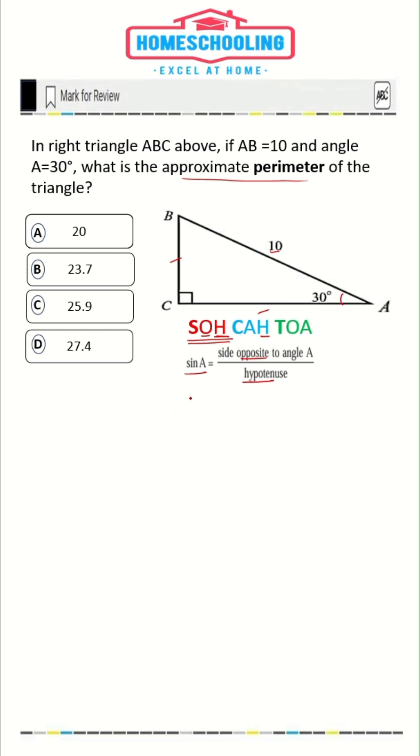Sine A, or sine 30, is equal to the opposite side. The opposite of angle A is BC. So we'll write BC divided by the hypotenuse. Hypotenuse AB, its value is 10.